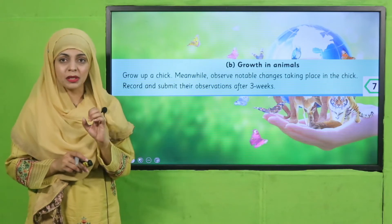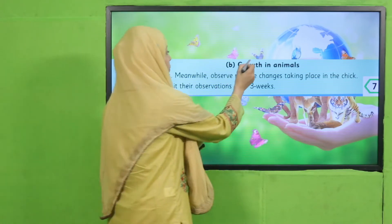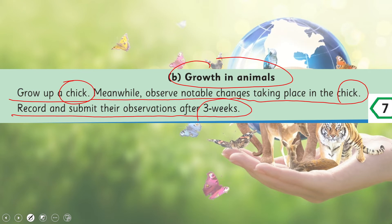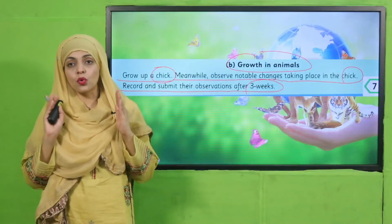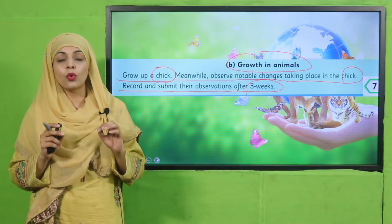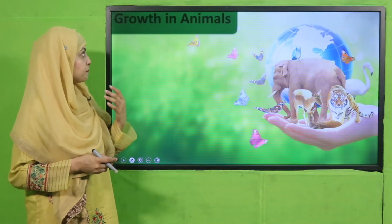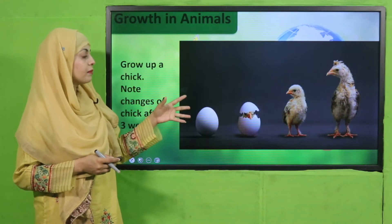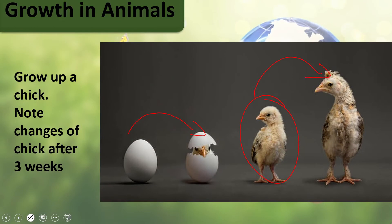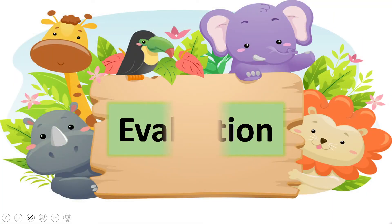Part B of the project is growth in animals. We will observe growth in animals alongside plants. For this, you need to grow a chick — observe the notable changes taking place in the chick and record and submit your observations after three weeks. A chick comes out of an egg and then grows in size; its color also changes as it develops.